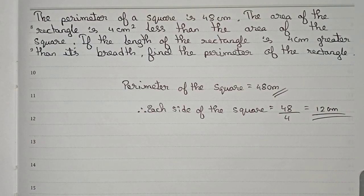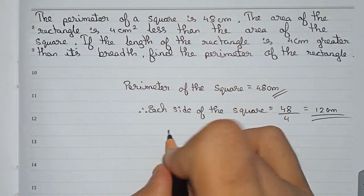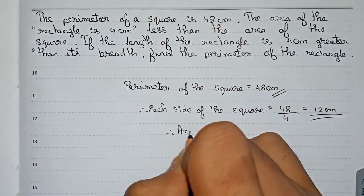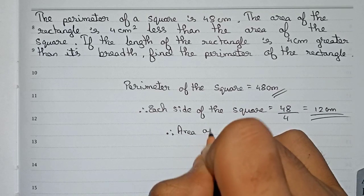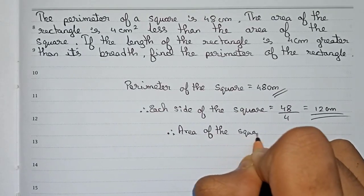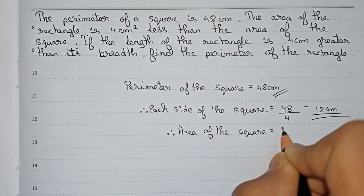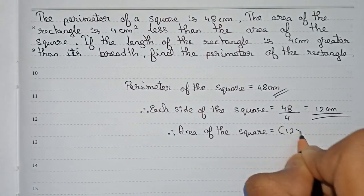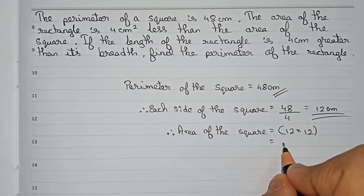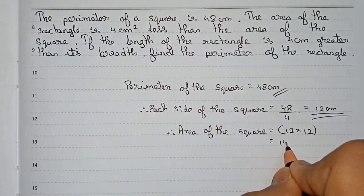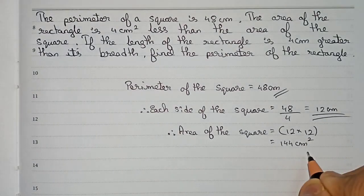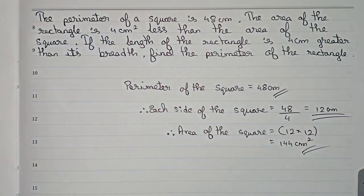With this 12 centimeters we can find out the area of the square. So the area of the square is equal to 12 into 12, and that will be equal to 144 centimeter square. So we have got the area of the square.